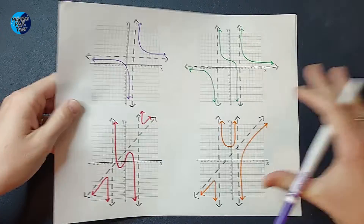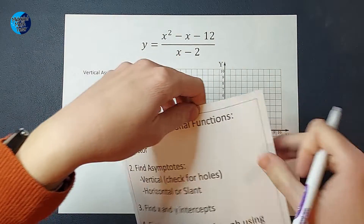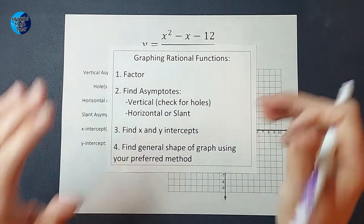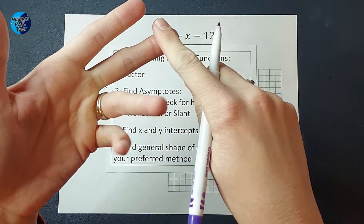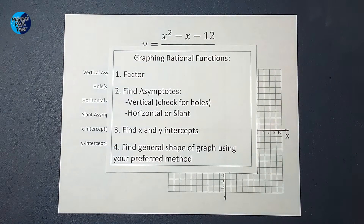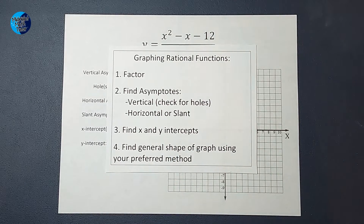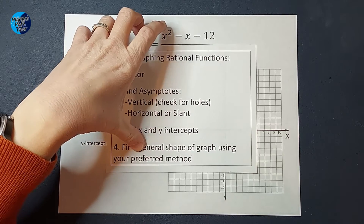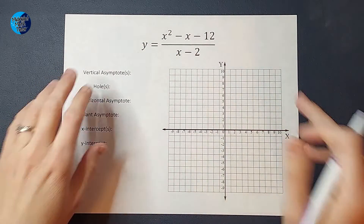Here are our steps. First, we're going to factor. Then we are going to find our asymptotes — vertical and horizontal or slant — and we'll check for holes. Then we're going to find our x and y intercepts. And then we're going to figure out the general shape of our graph using our preferred method, and we'll talk about that once we get there. So my first thing I'm going to do is factor.